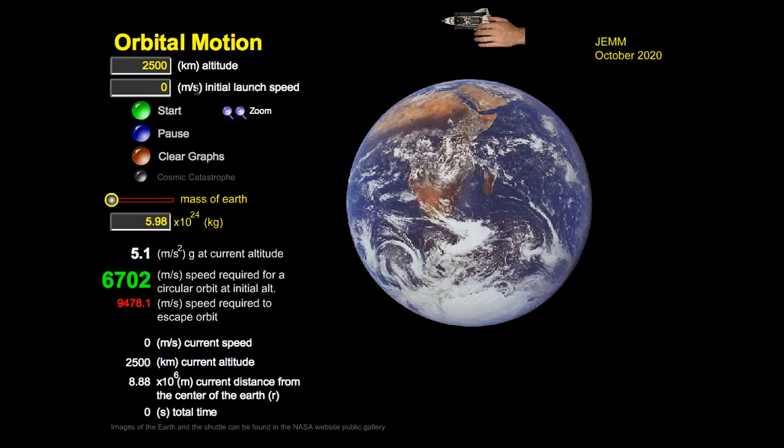So let's start off with a satellite that's at a height of 2,500 kilometers above the Earth's surface. We're not going to give it any launch speed. Let's see what happens when I press the start button and remove my hand. Notice the object falls straight down. That's exactly how we'd expect it to behave. If we drop an object, well, it's going to fall.